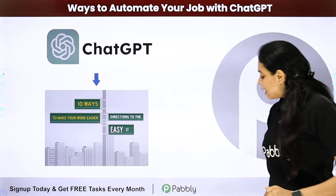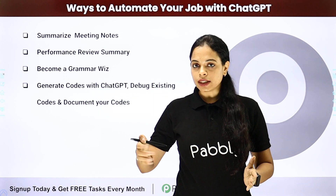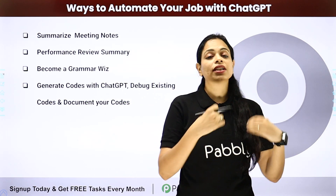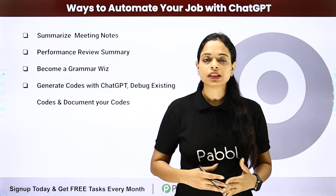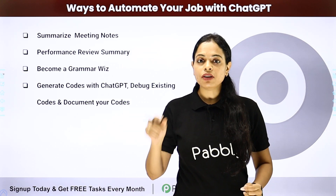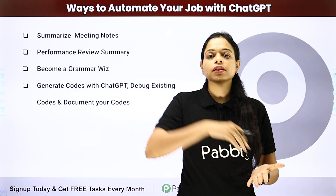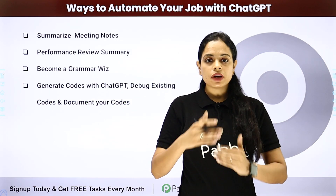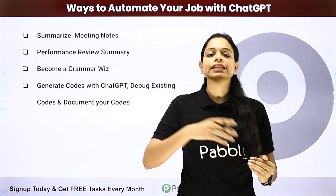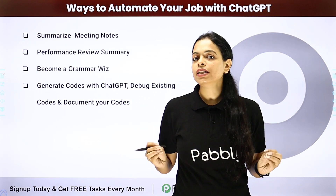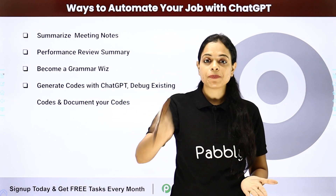In this video, I'm going to talk about ways to automate your job with ChatGPT. The first and most important thing is meeting notes. Every time you attend a meeting, you have to summarize the notes and send them to people. Doing this manually may take 35 to 40 minutes. But with ChatGPT, it can summarize your notes within a minute, then integrate with email, WhatsApp, Slack, or Discord — and with just one click, the summary is ready and sent.